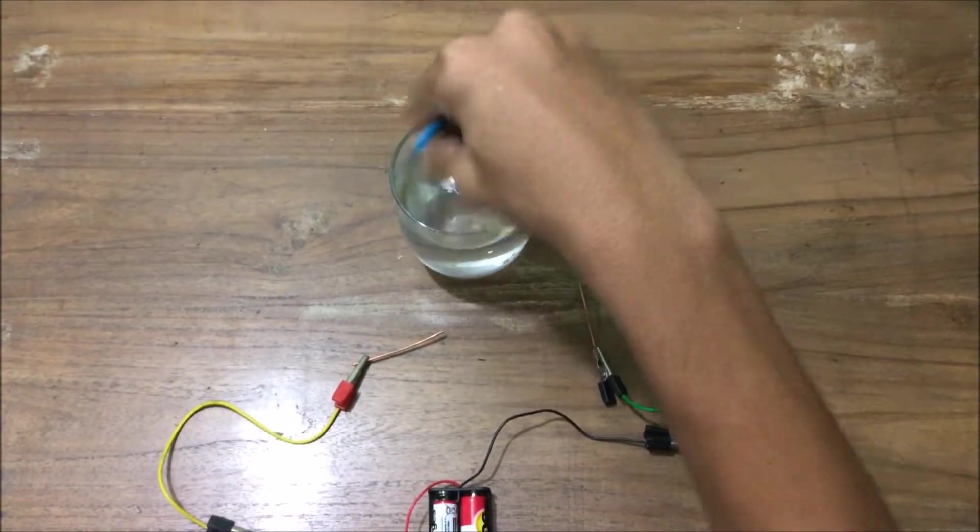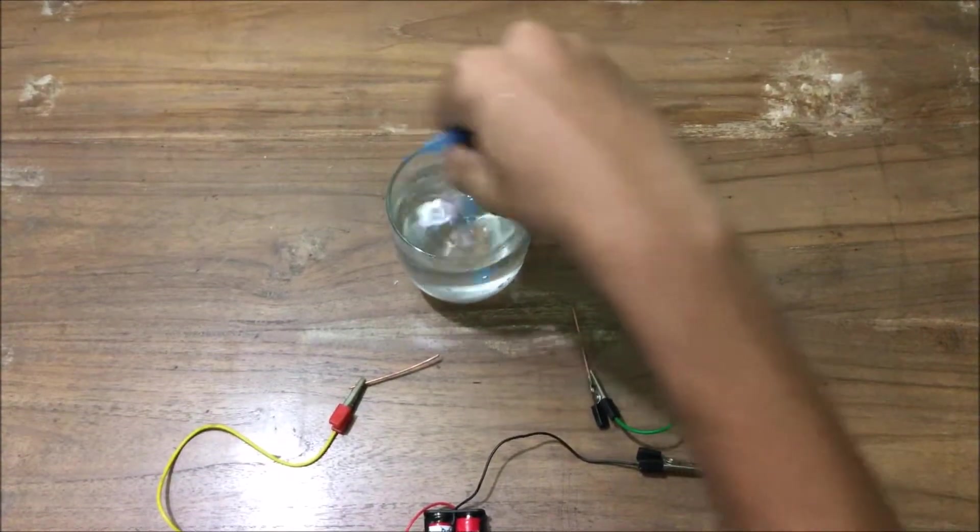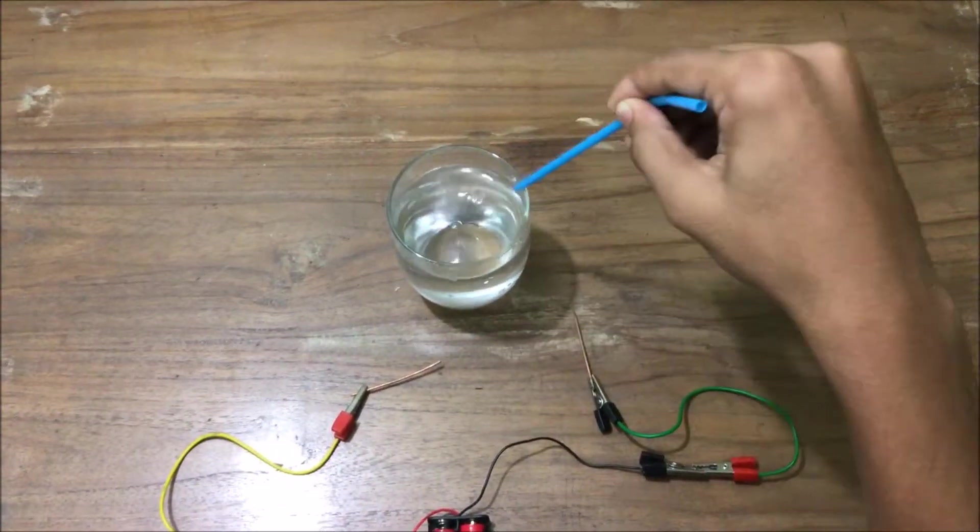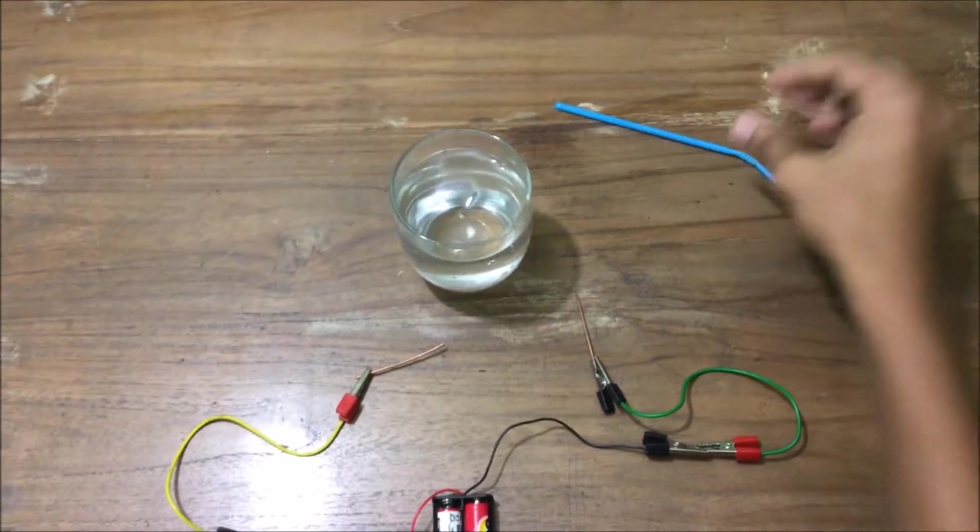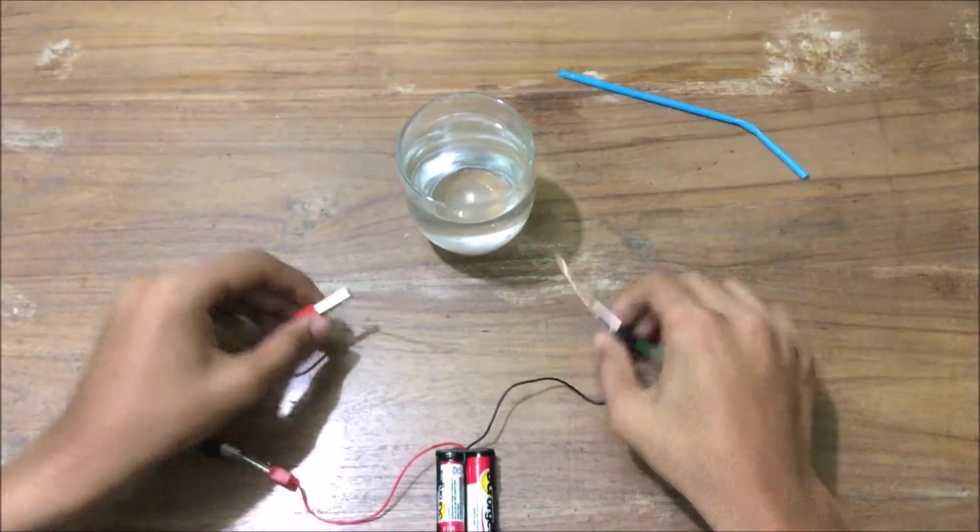Now we will take two conductive rods. In this case I took copper rods. You can take aluminum rods or anything conductive.